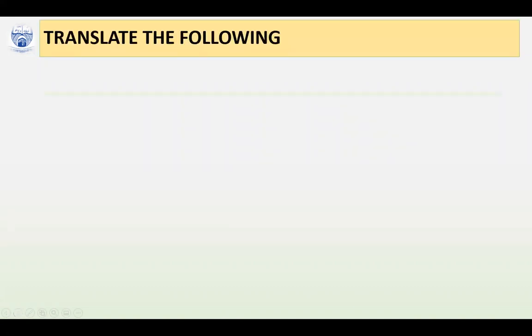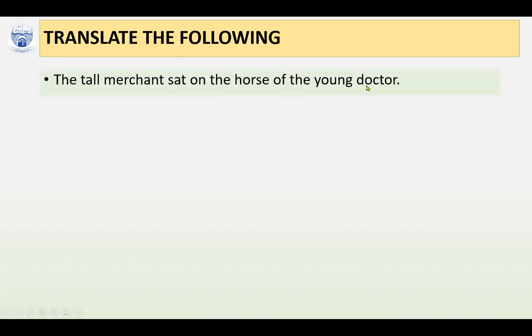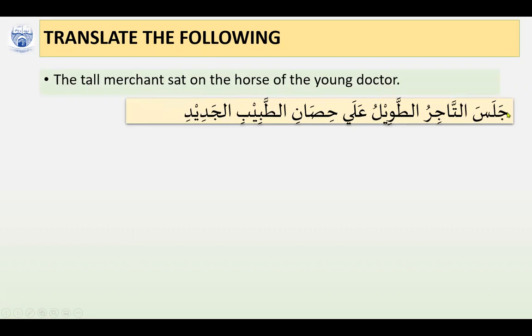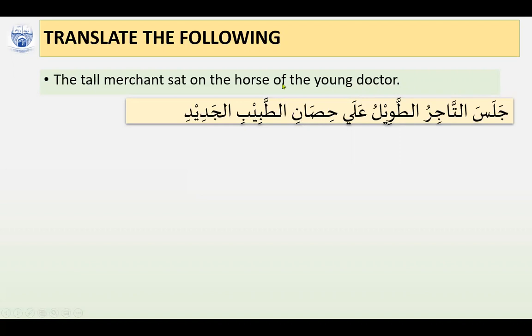Likewise we have a few more sentences. 'The tall merchant sat on the horse of the young doctor.' Notice: tall merchant sat — Jalasa Al-Tajiru Al-Tawilu — subject and verb in agreement. Mawsuf and Sifah — both in the case of Rafa by Dhamma. Ala is Harful Jar. Hisoni Tabib is Mudhaf-Mudhaf Ilayhi — 'horse of doctor' — an idafa structure.